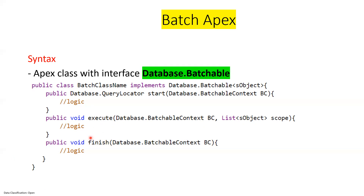After all the jobs are completed in this batch, if you want to execute any post-execution logic - for example, sending an email to the user who executed this batch job with details like how many records were processed and how many failed - you can put that logic in the finish method. The finish method is where you write any post-execution logic.